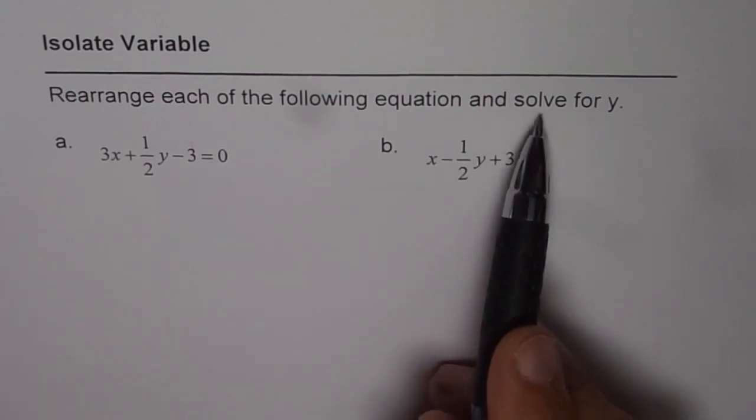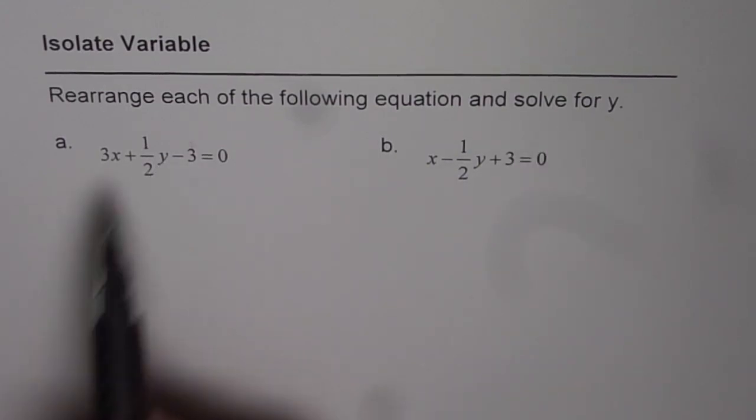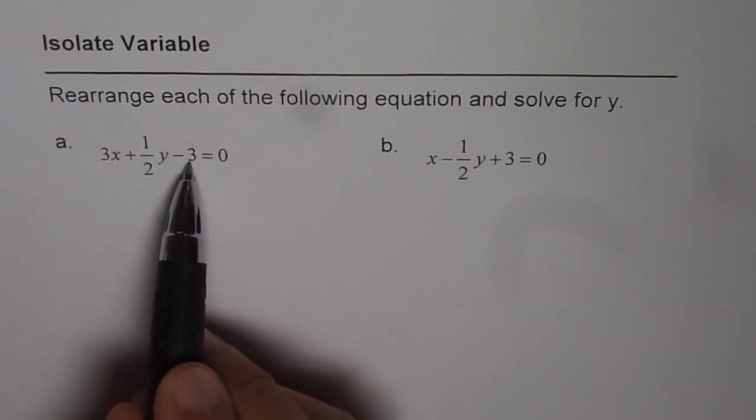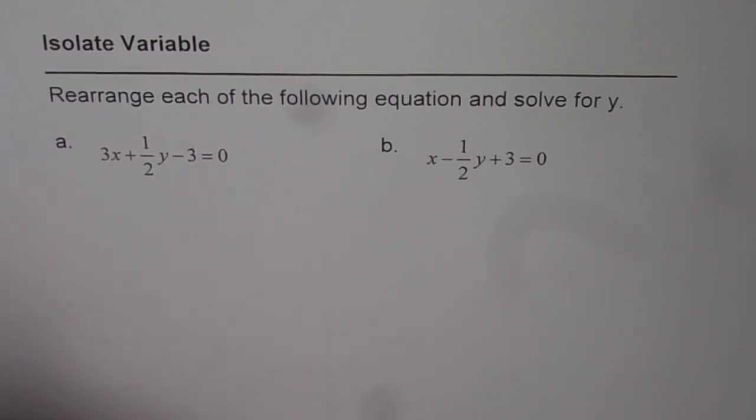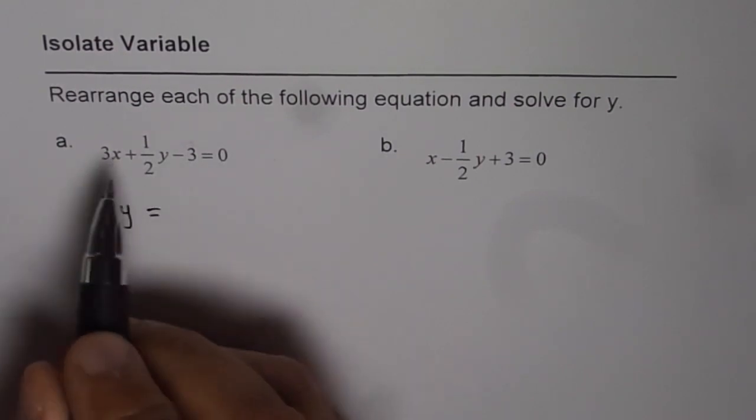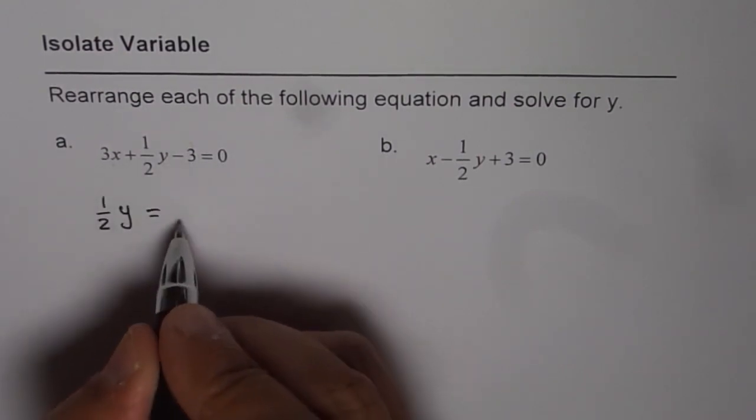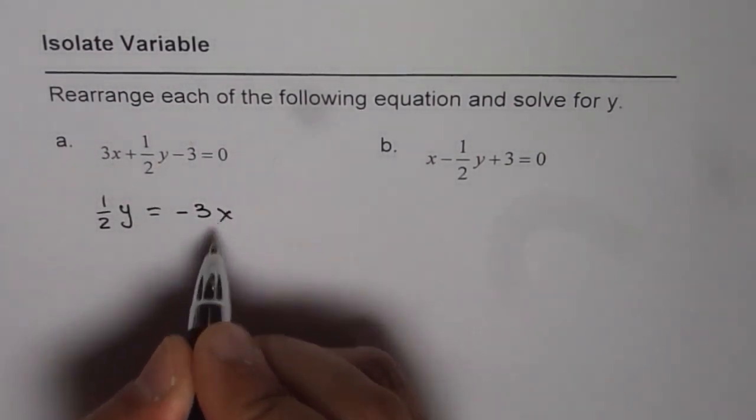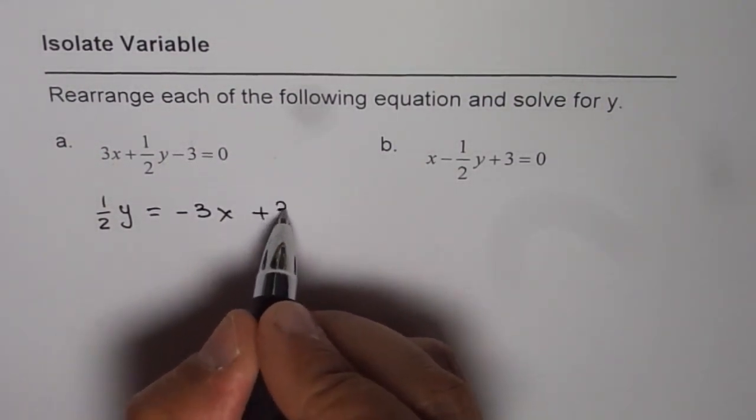That is, we need to solve for y. That means isolate y. So we will take all of the terms on the other side. So we have half of y equals to, when I take 3x to the other side, I get minus 3x and minus 3 to the other side gives me plus 3.